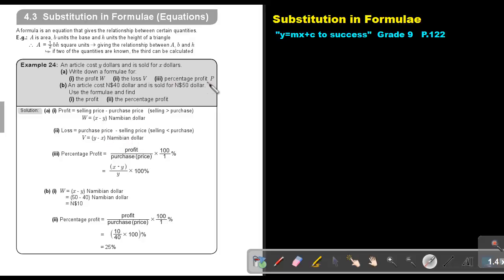The percentage profit will be the profit over the purchase price multiply 100%. So that's profit over the purchase price, the cost price, multiply 100%.